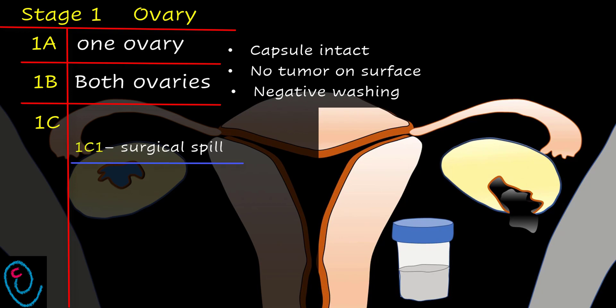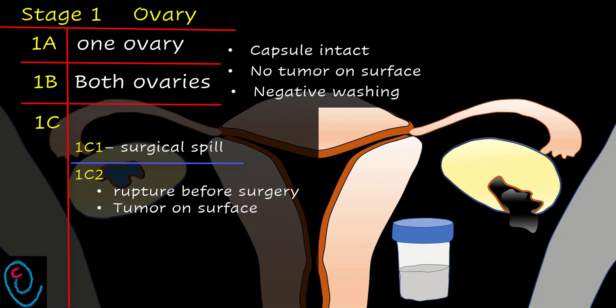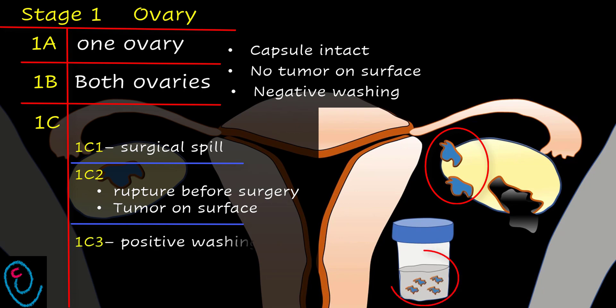In 1c2, the capsule is found ruptured before surgery, or there is tumor on the surface of the ovary. In 1c3, there are malignant cells in ascites or peritoneal washing.